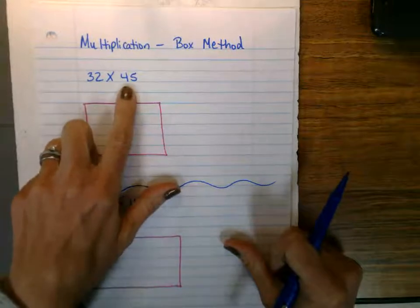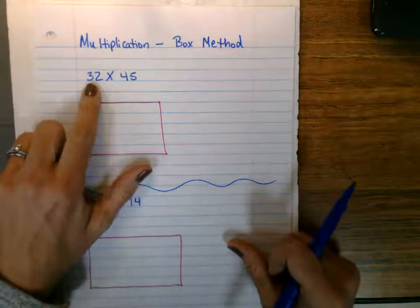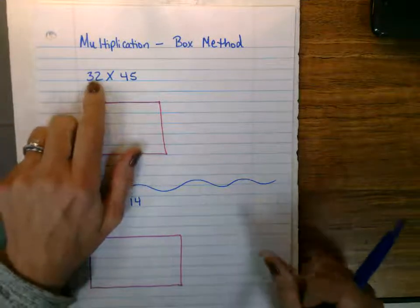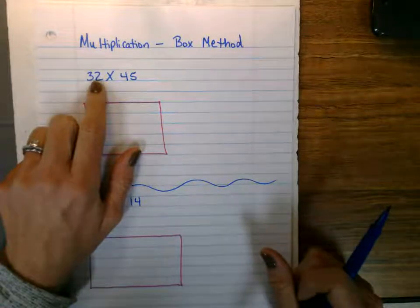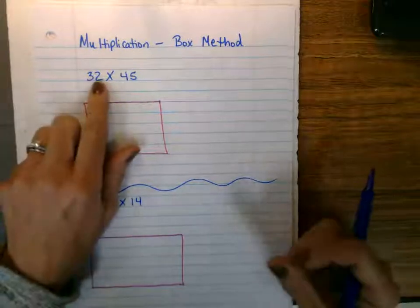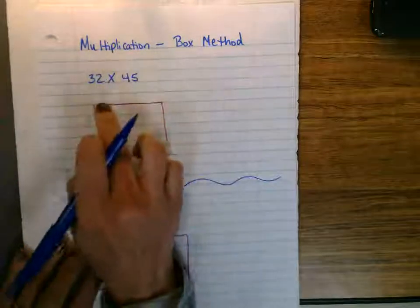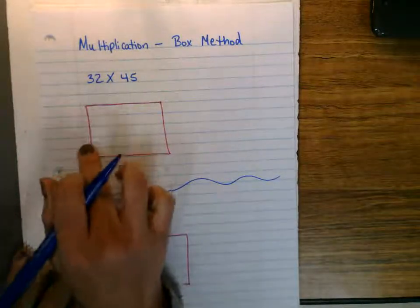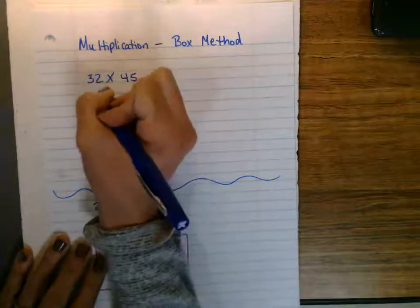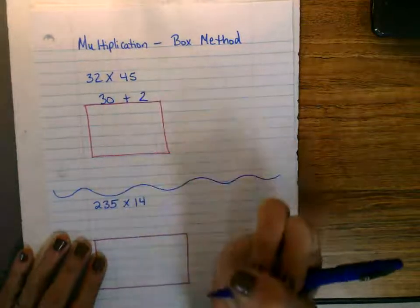Here's our first problem, 32 times 45. Well, this actually teaches, which is another fourth grade standard, kids to expand numbers. They get to realize and learn that 32, that each number in 32, the ones place and the tens place has a value. The 2 is a 2, and the 3 actually represents 30. So it does not matter if I start on this side or this side for the number, but I'm going to expand 32 again and say the 3 represents a 30, and the 2 in the ones place just represents a 2.